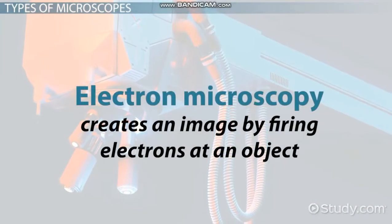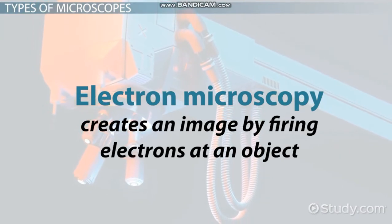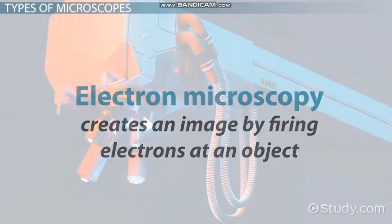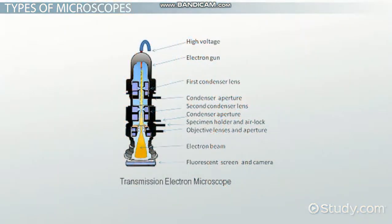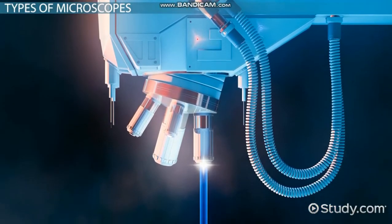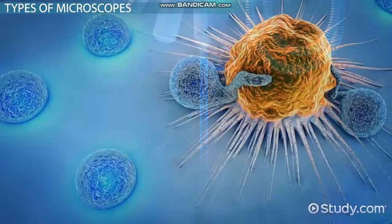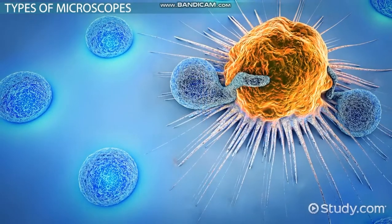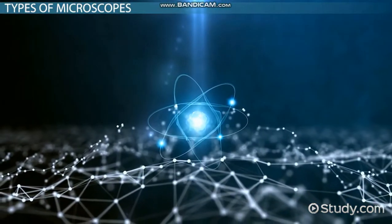Electron microscopy creates an image by firing electrons at an object. The electrons bounce off the object and return to a sensor, which creates an image from the data. This is the way we were first able to create images of the atom itself. The benefit of an electron microscope is that electrons have a wavelength 100,000 times smaller than light, which increases the resolution of the image and makes it possible to view an atom.